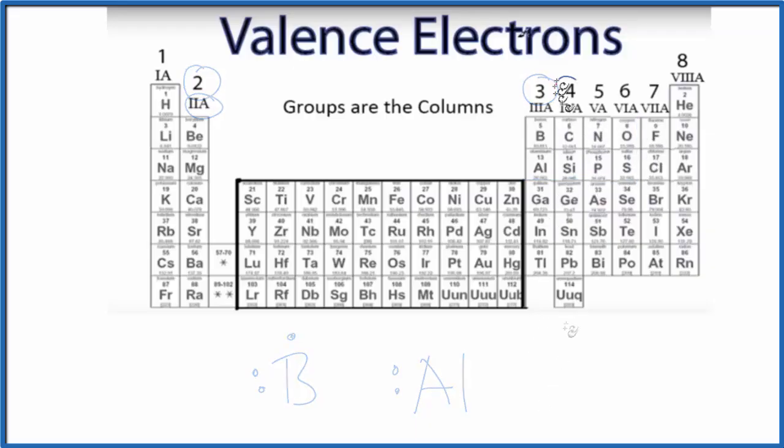Let's go on to group four, also called group 14. Not surprisingly, something like carbon: one, two, three, four valence electrons.